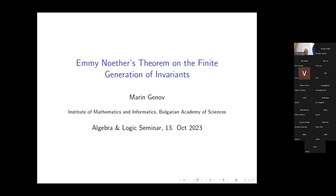This is an educational talk. My talk today is going to be about a very classical result in mathematics, originally due to Emmy Noether. This theorem lies on the border between commutative algebra and representation theory. I'm going to give two different proofs of this result.